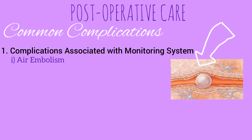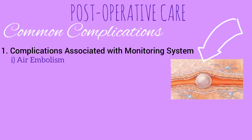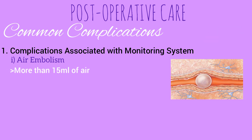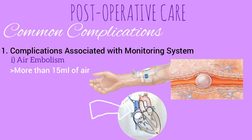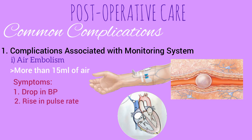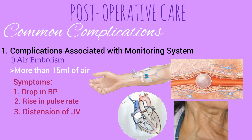Let's start with complications associated with the monitoring system. First is air embolism — it is a pathological condition caused by air or gas bubbles in the vascular system. It can occur when more than 15 ml of air is accidentally introduced during or after insertion of a venous catheter. This air can travel through veins into the right atrium and prevent right heart filling, resulting in a drop in blood pressure, rise in pulse rate, and distension of the jugular vein with a rise in JVP.